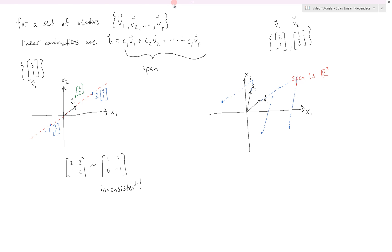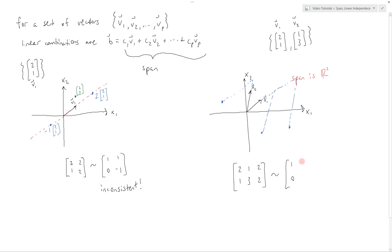Once again, we can show this by looking at the augmented matrix. We have our vectors (2, 1) and (1, 3). What linear combination will make up a point b? Let's say b is again (2, 2). This reduces to 1, 0, 0, 1 in the left part of the matrix, with values on the right. In general, we can see that it will be consistent for any b because we have a 1, 0, 0, 1 identity structure in this part of the matrix. Therefore, we'll have a solution for any b.